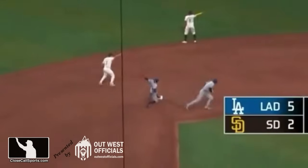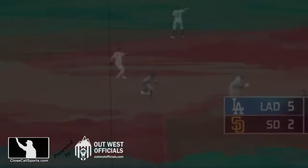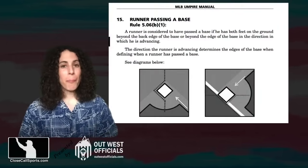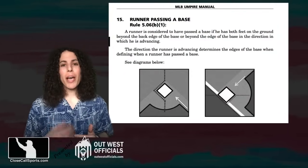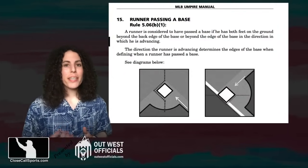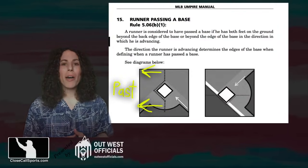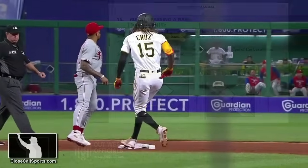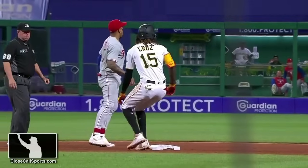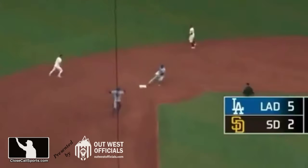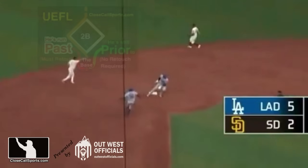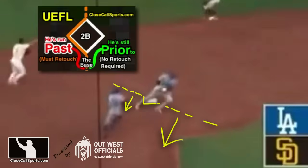How do you know he rounded second base? Remember the diagram from the umpire manual. To be considered to be on the base, you have to be on the left side of that line. And it looks like on replay, Ohtani is — maybe barely — but he is on the past side of the line.